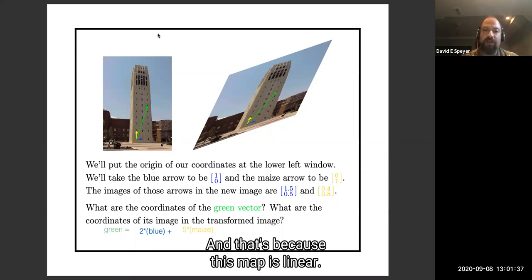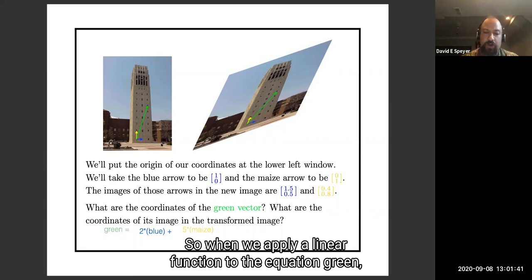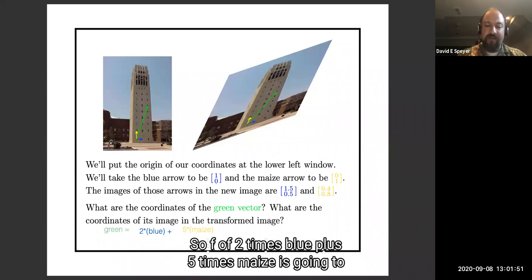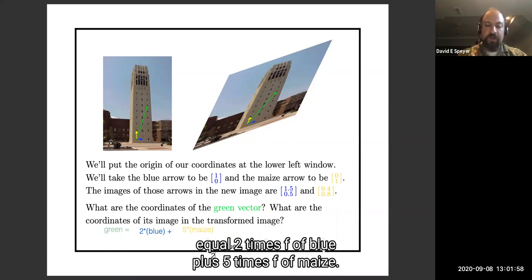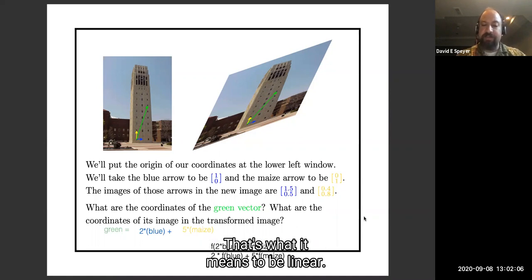That's because this map is linear. When we apply a linear function to the equation green equals, so f of 2 times blue plus 5 times maize is going to equal 2 times f of blue plus 5 times f of maize. That's what it means to be linear.